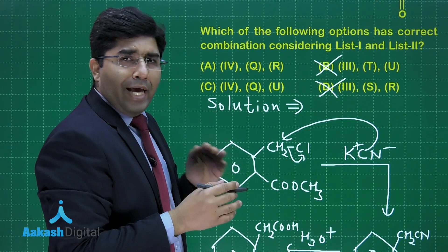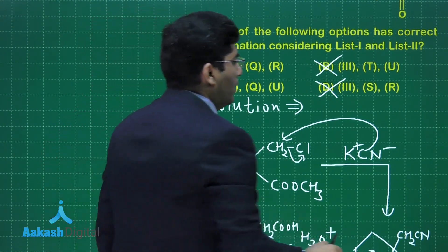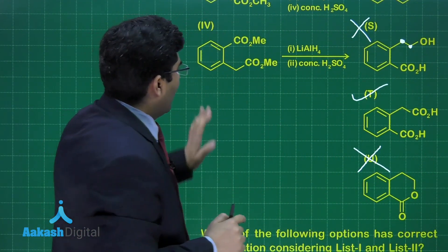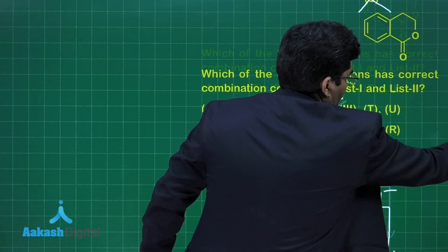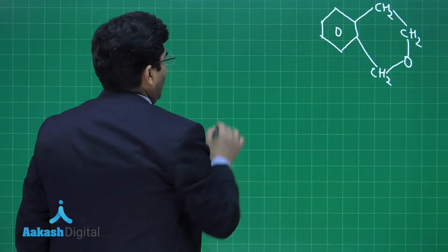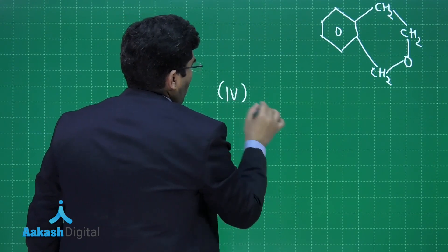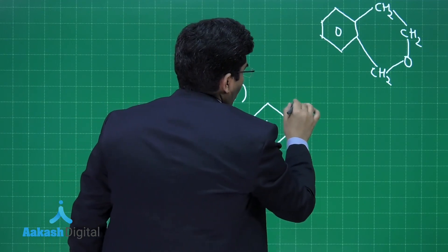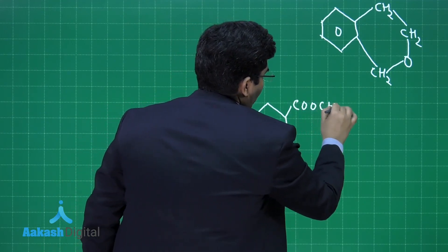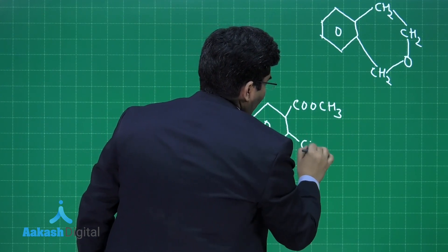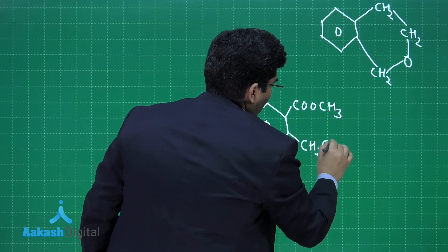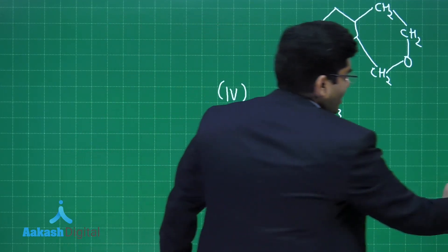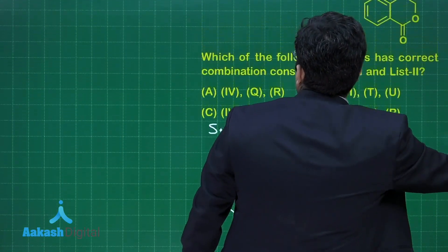For that, we have to carry out the fourth reaction. There is a benzene ring and two ester groups are attached to it. If you start the fourth reaction, the reactant is benzene ring having COOCH3 and CH2COOCH3. This is the reactant. Let us see what he is adding in the reaction.